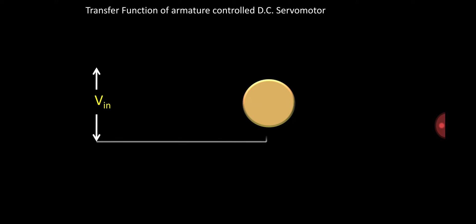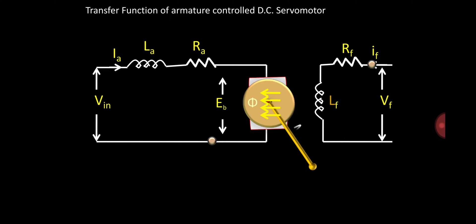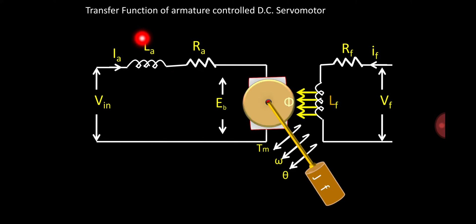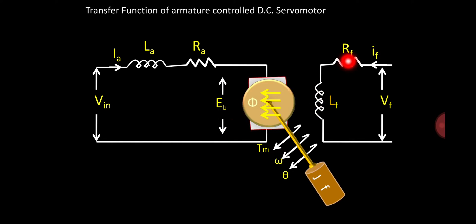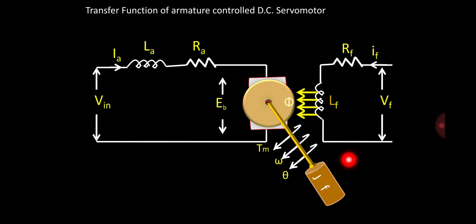This is the diagram for armature controlled DC servomotor. Here you can see the armature field winding, and after the rotation of armature, we collect the mechanical power using a shaft connected to a load. VIN is input voltage, IA is armature current, LA is armature inductance, RA is armature resistance, EB is back EMF, RF is field resistance, IF is field current, LF is field inductance. TM is torque of the motor, omega is angular velocity, theta is angular displacement, J is moment of inertia, and F is the damper.